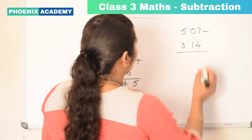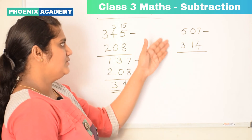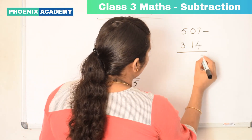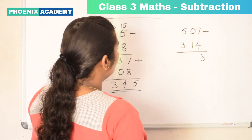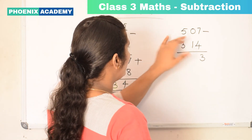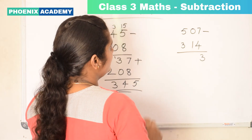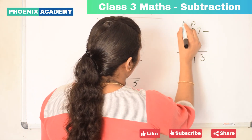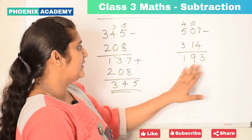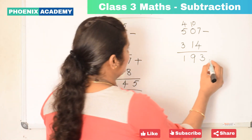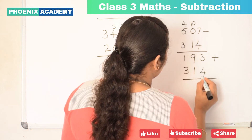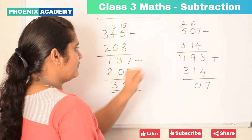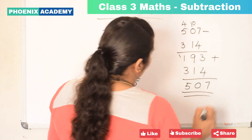Let's do 507 minus 314. 7 minus 4 is 3. 0 minus 1: it's not possible, so we borrow from the hundreds place. 5 becomes 4, and 0 becomes 10. 10 minus 1 is 9. 4 minus 3 is 1. To check our answer, we add 193 and 314: 3 plus 4 is 7, 9 plus 1 is 10, carry 1. Then 1 plus 3 plus 1 is 5. We get 507, the bigger number, so our answer is correct.